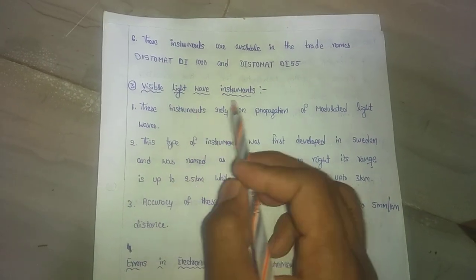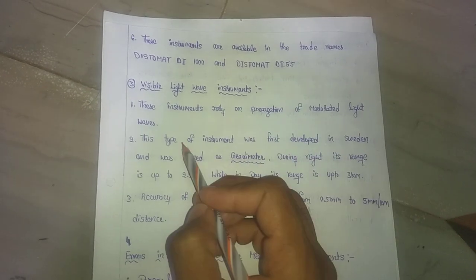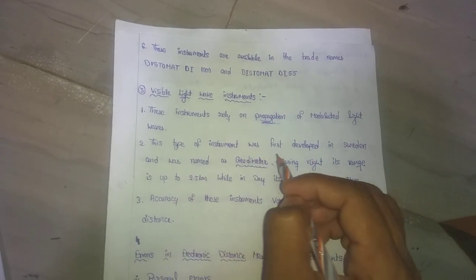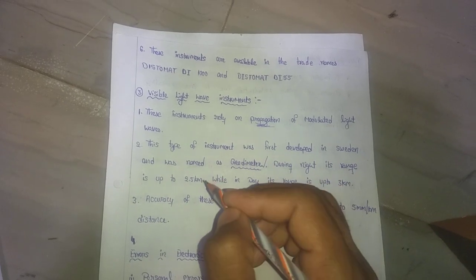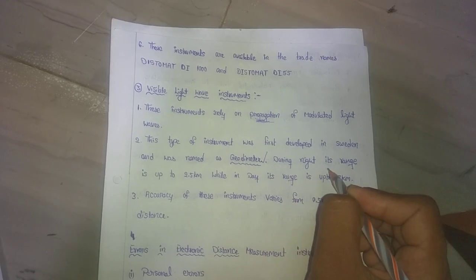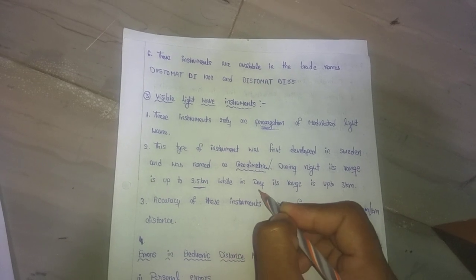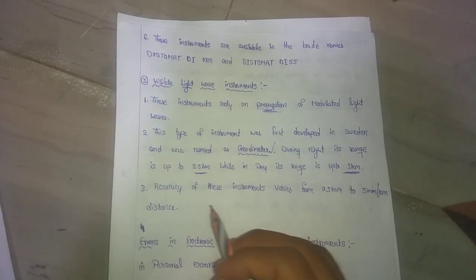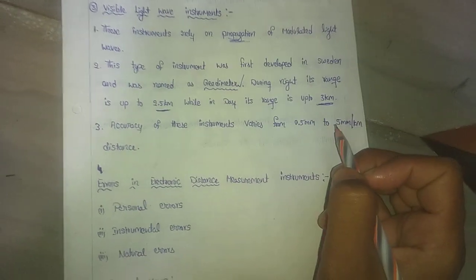Visible light wave instruments rely on propagation of modulated light waves. This type of instrument was first developed by a Swedish scientist, and the name is Geodimeter. During night, its range is 2.5 kilometers, while during day and night combined the range is three kilometers. The accuracy of these instruments varies from 0.5 mm to 5 mm per kilometer.